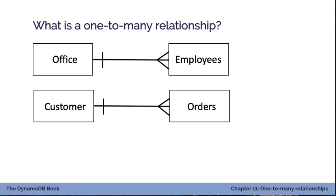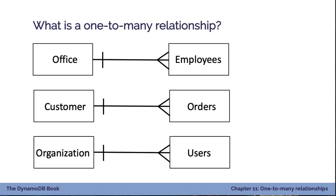Likewise, you can have a customer and orders — customers make multiple orders at your online store, so a customer has multiple orders over time. Another example is organization and users, which we've seen with our SaaS example, where an organization can have multiple users belonging to it.